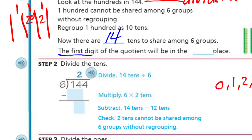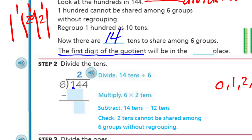Now comes the whole purpose of our lesson — that first digit. The first digit of the quotient will be in the tens place, because we already decided 6 can't go into the 100s place. We have 14 tens, and we divide that by 6. Using our DMSB steps — Dad is Divide, Mom is Multiply — 6 times 2 is 12, so I put my 12 in there and subtract. We get 2 left over. And 14 tens equals 140, which is actually in that number.